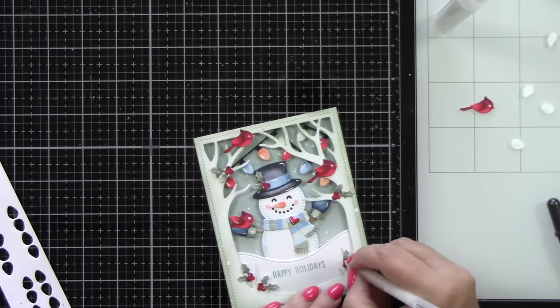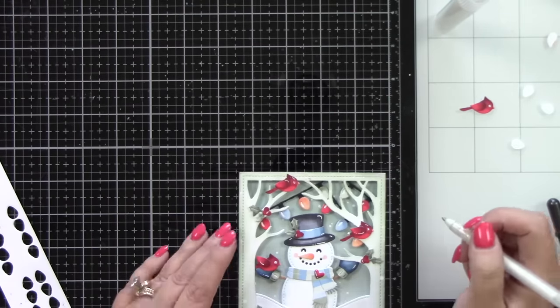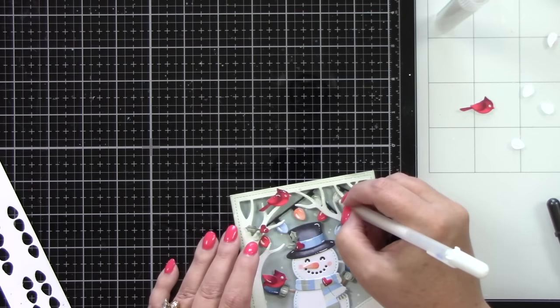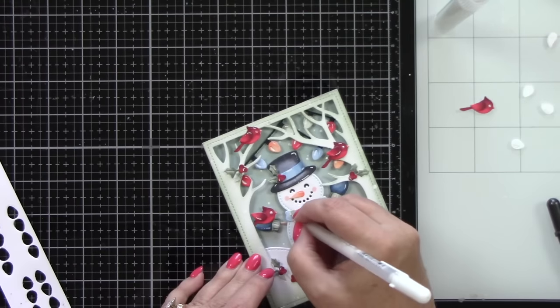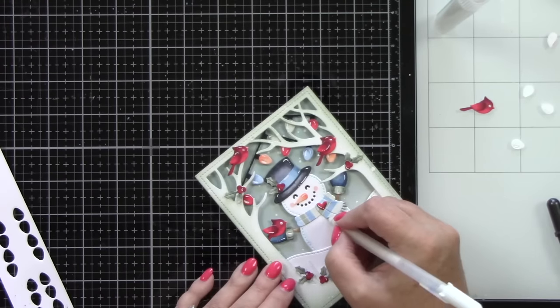And then now we're going to add some really important finishing details with the white gel pen. I'm going to add it between all the stripes on the sweater. I'm going to add little highlight areas on the berries and leaves, on the birds, on his hat, on his mittens, on the lights, of course, his carrot nose. And here's those little stripes in between each color on his scarf.